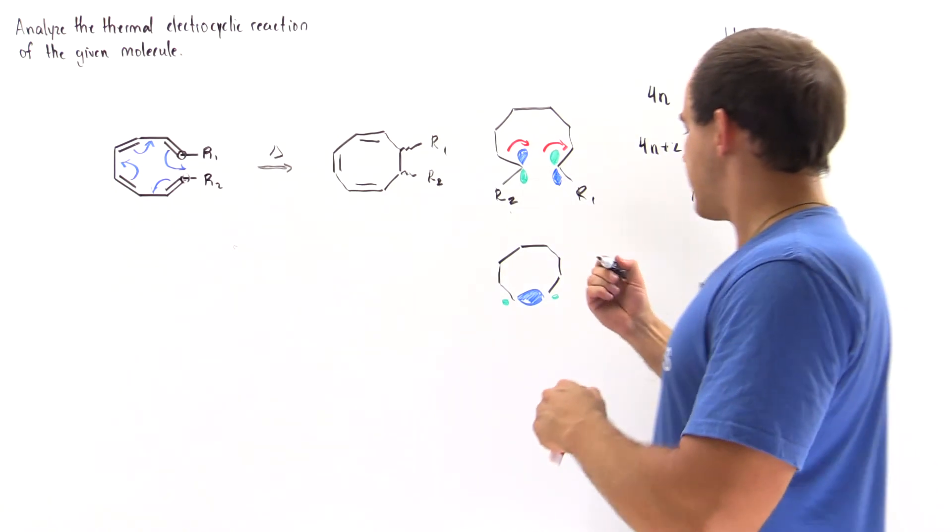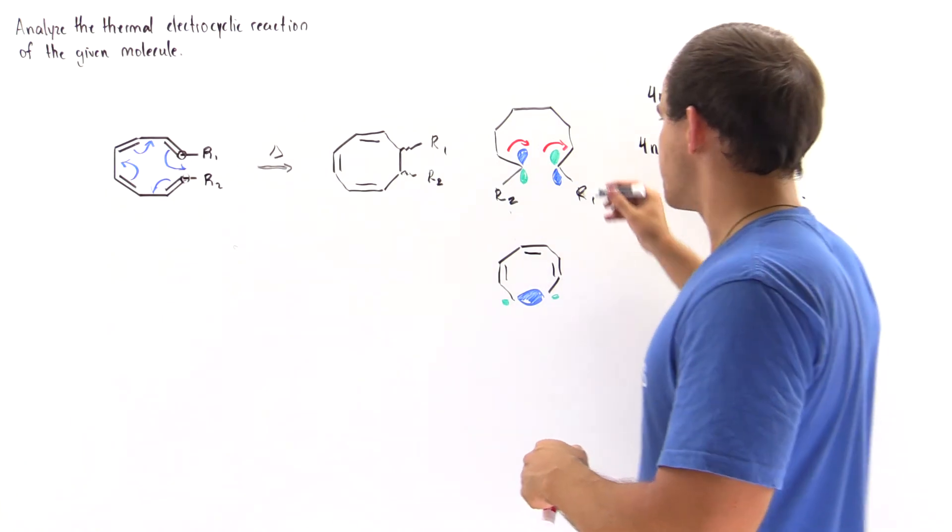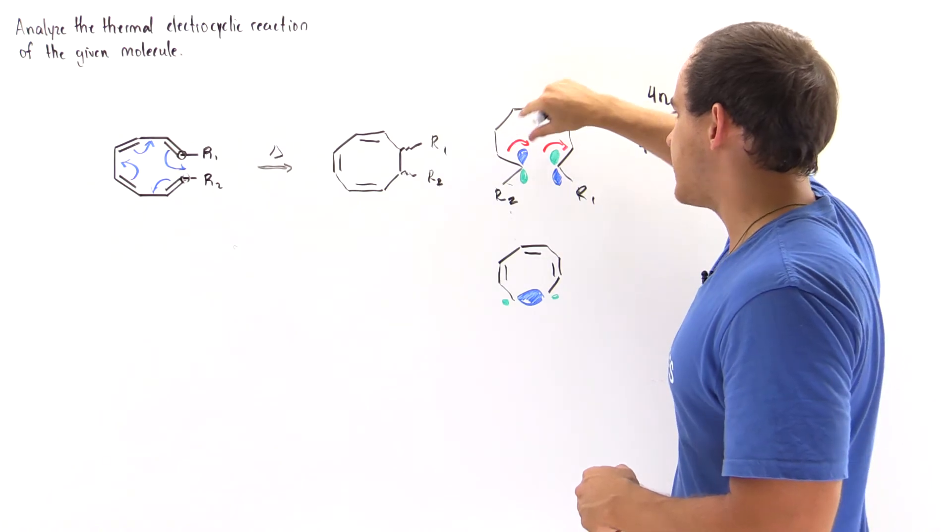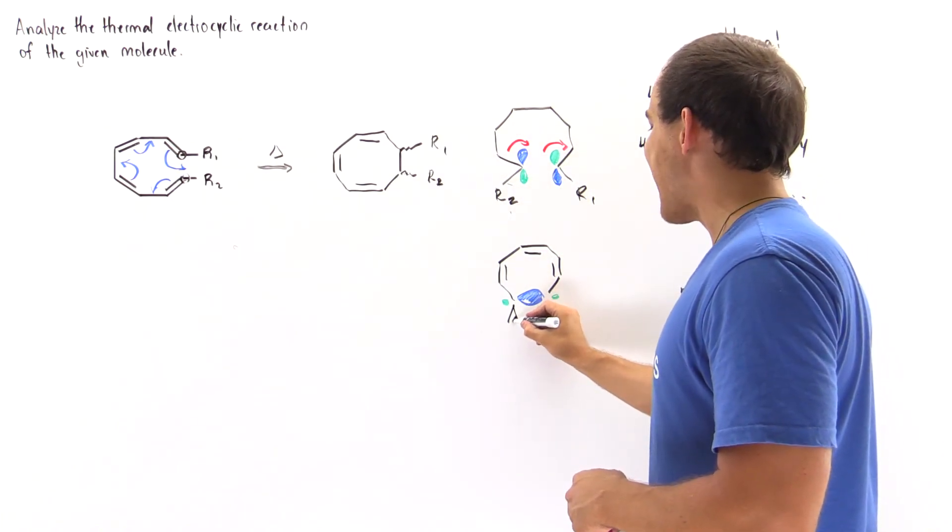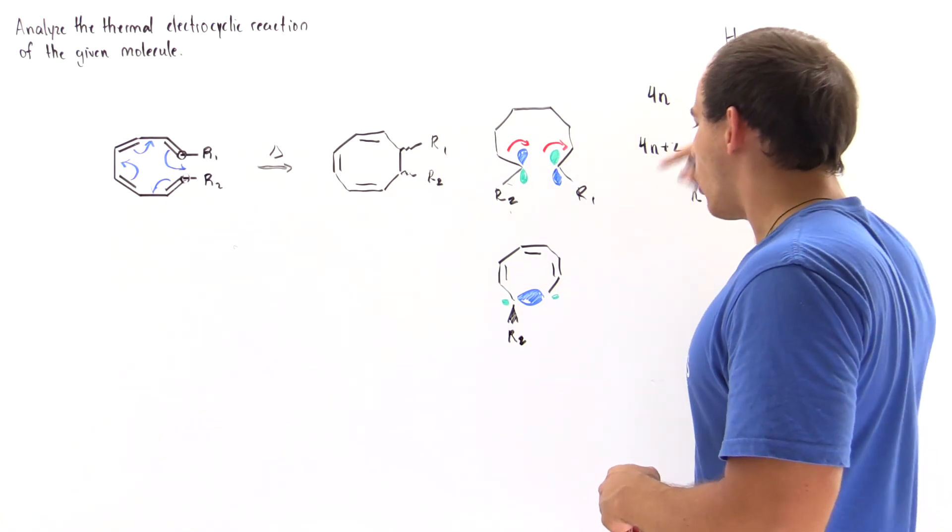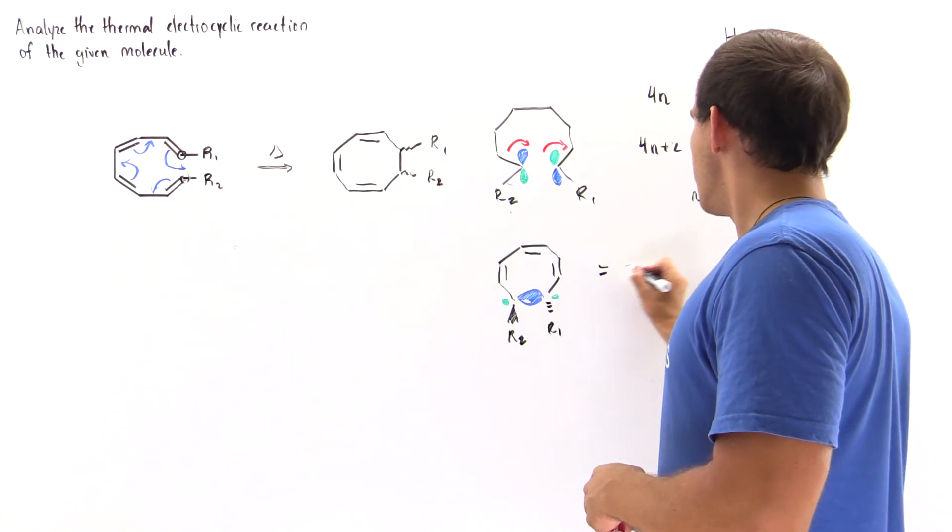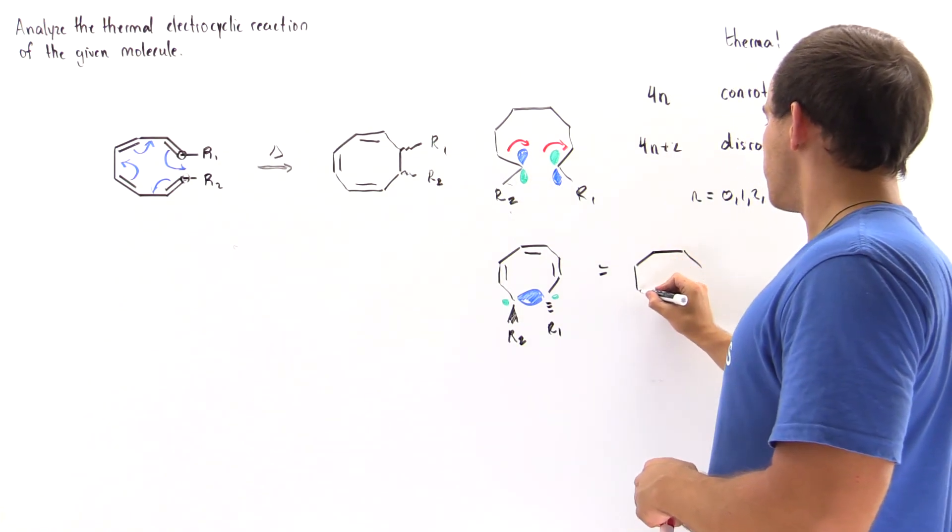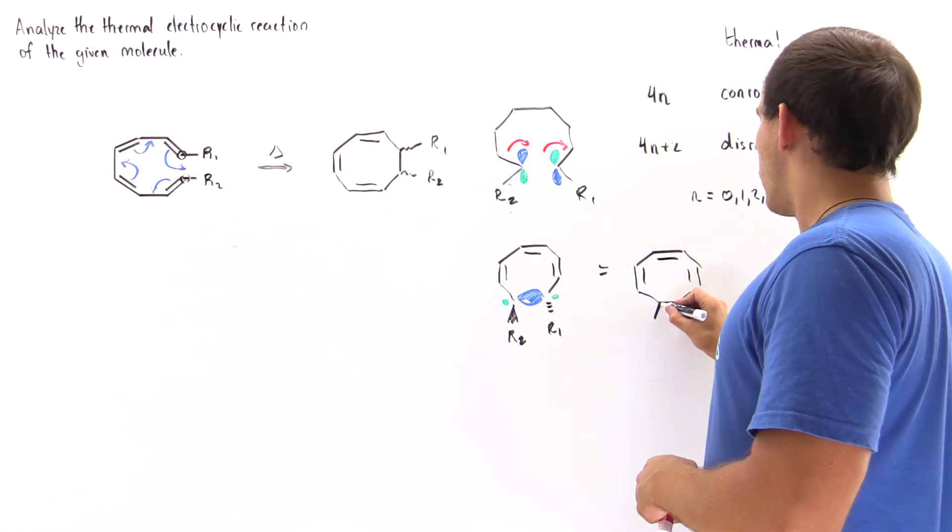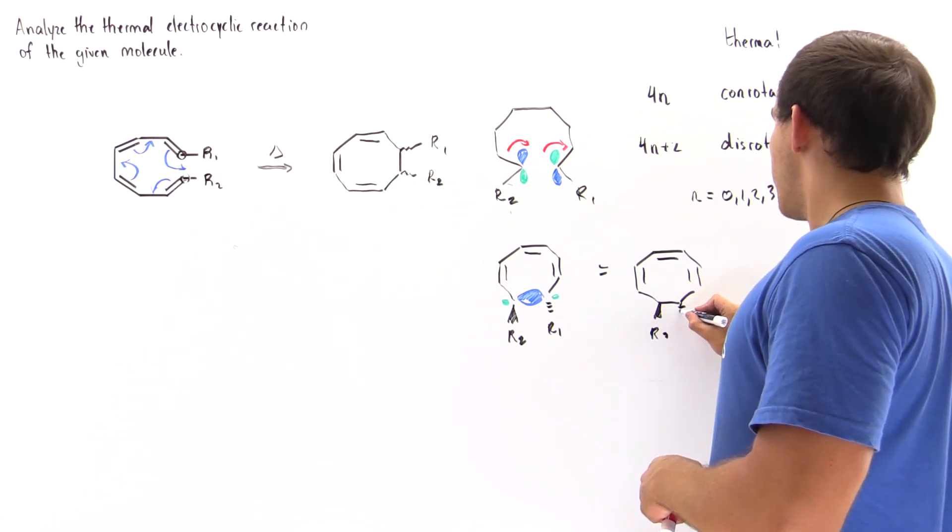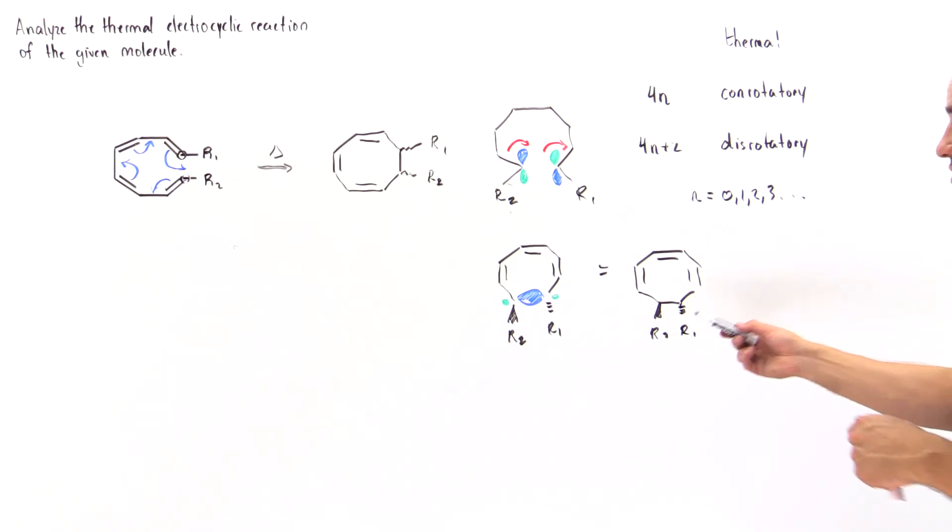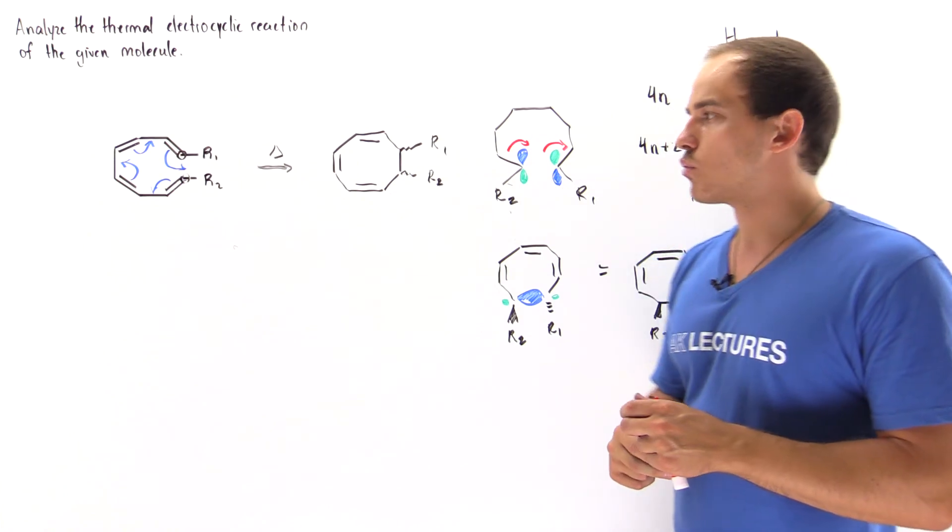So we have a molecule that looks something like this. Now when this rotation takes place, because it rotates this way, the R2 group will point out of the board, and our R1 group, when it rotates down, will point downward. And so the final molecule looks something like this. We see that under thermal conditions, when this reaction takes place, we have a trans isomer because these two R groups point in the opposite direction.